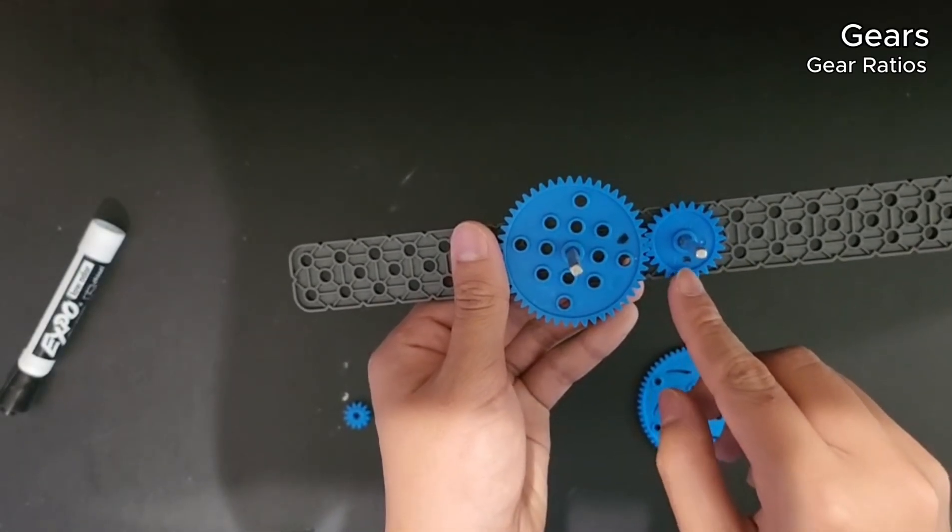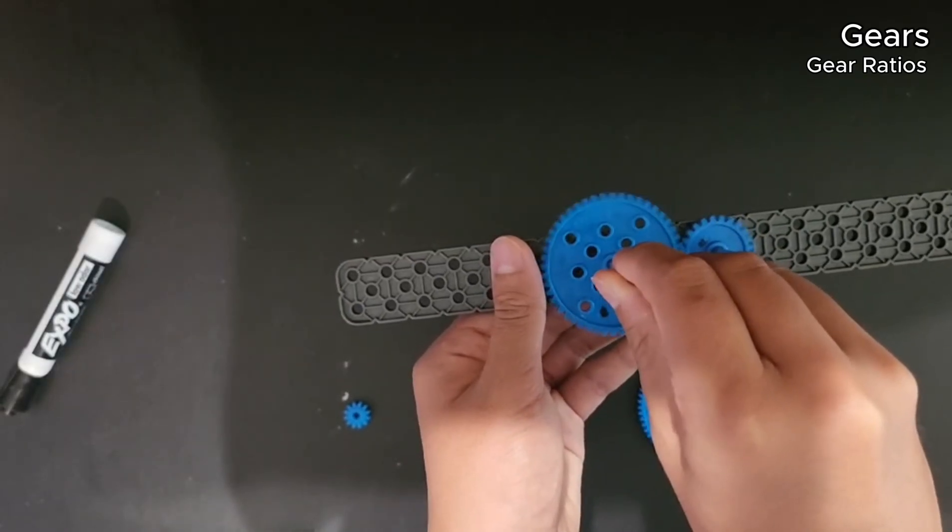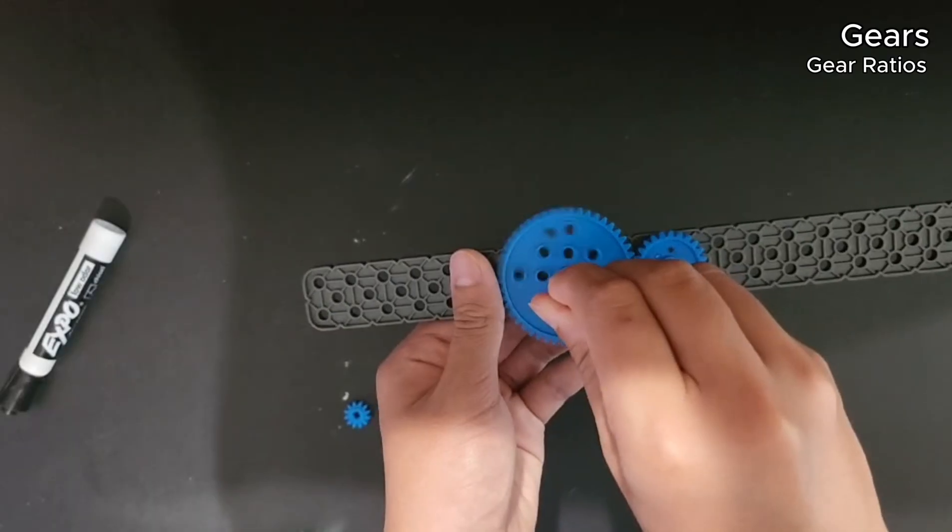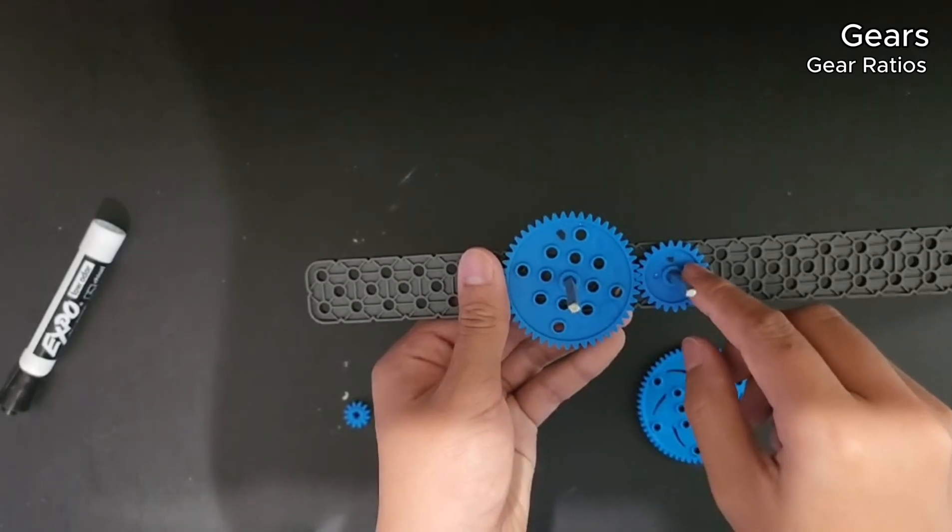So this is spinning two times the amount as this. So if I keep on spinning, you can see they've completely unaligned and that was one full rotation and we're back together.